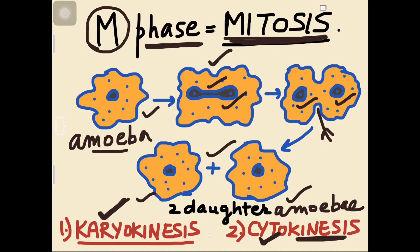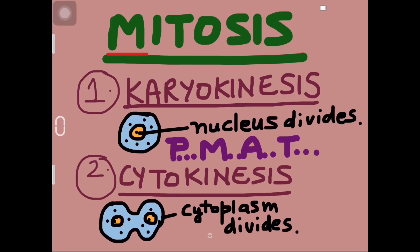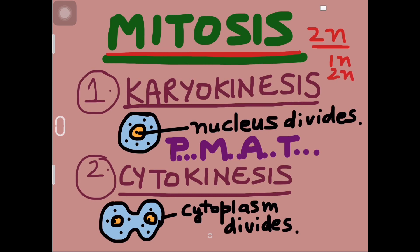Mitosis is a type of cell division that occurs in diploid somatic cells — body cells — and in gonads, that is testes and ovary of animals, at the time of germ cell formation when they multiply. In plants, mitosis occurs in both 1n as well as 2n cells.